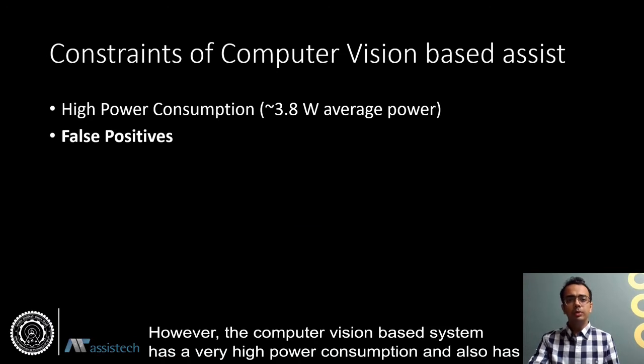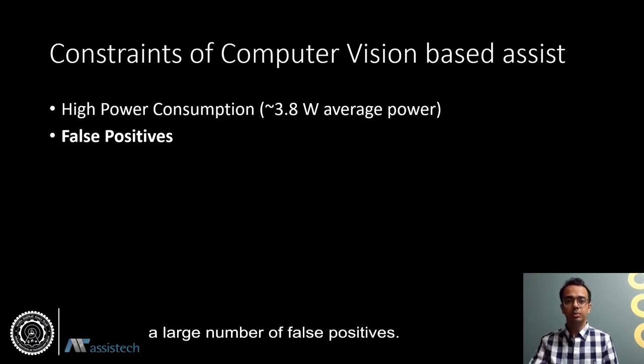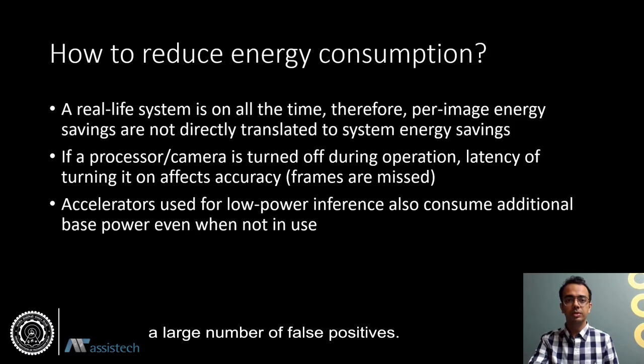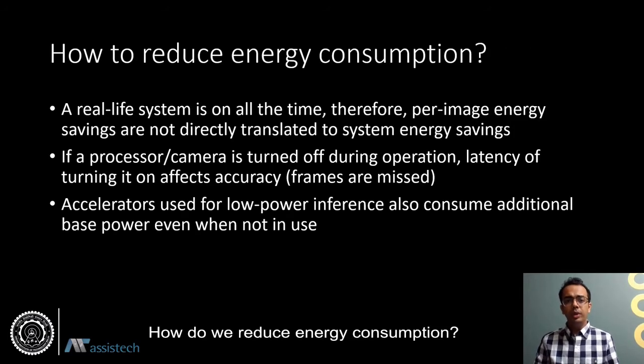However, the computer vision based system has a very high power consumption. It also has a large number of false positives. How do we reduce energy consumption?